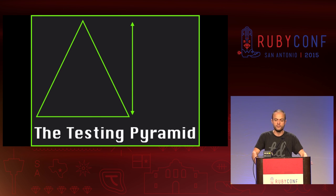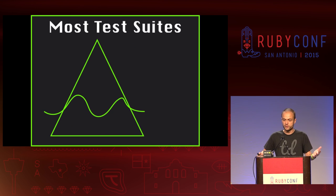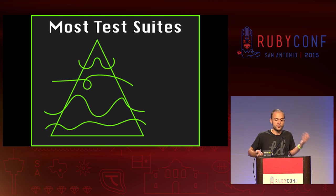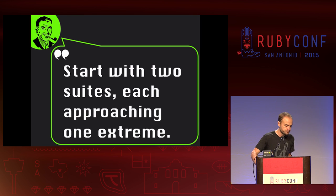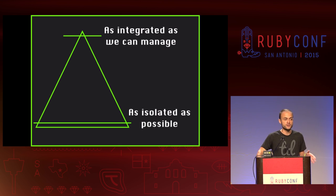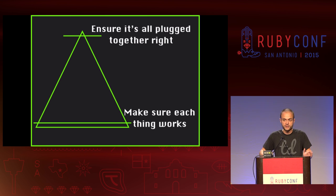In Agile land, there's this illustration called the testing pyramid. Stuff at the top is more integrated, stuff at the bottom is less integrated. When I look at most people's test suites, they're all over the place — some tests call through to other units, others fake out relationships, some hit a database but fake third-party APIs. Every time I open up a test I have to read it carefully and understand what's real and what's fake. Instead, I start with just two suites in every application I write: one suite I make maximally realistic, as integrated as I can possibly manage, and another I make as isolated as possible. The bottom suite makes sure every little thing works; the top suite makes sure when it's all plugged together, nothing blows up.